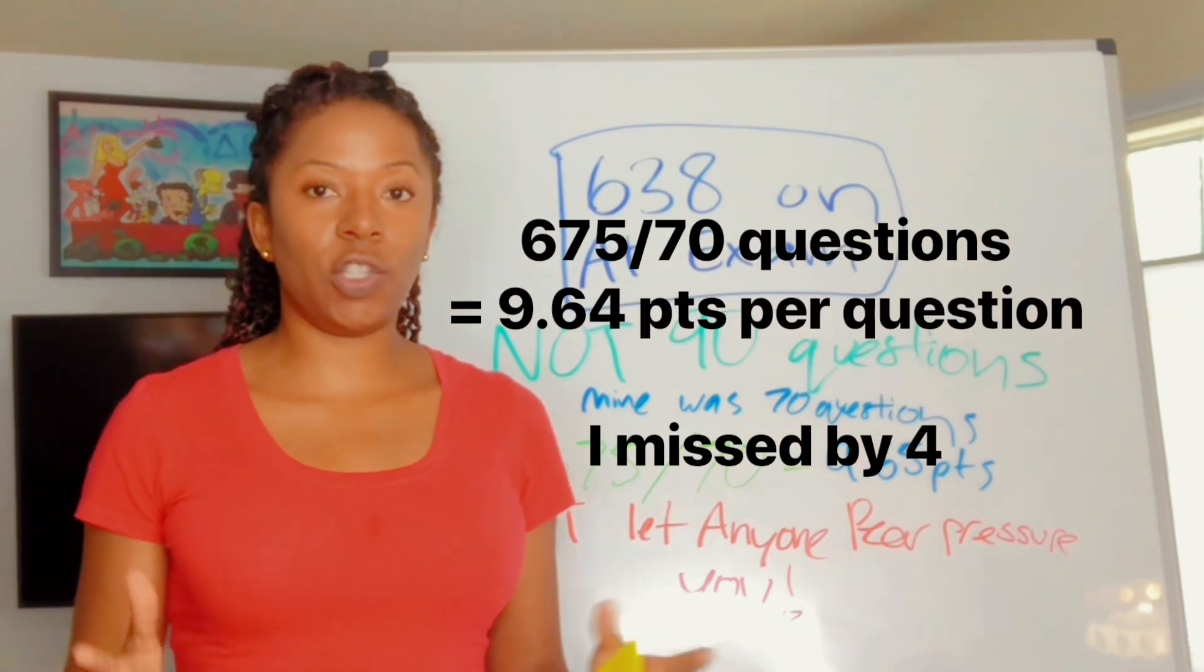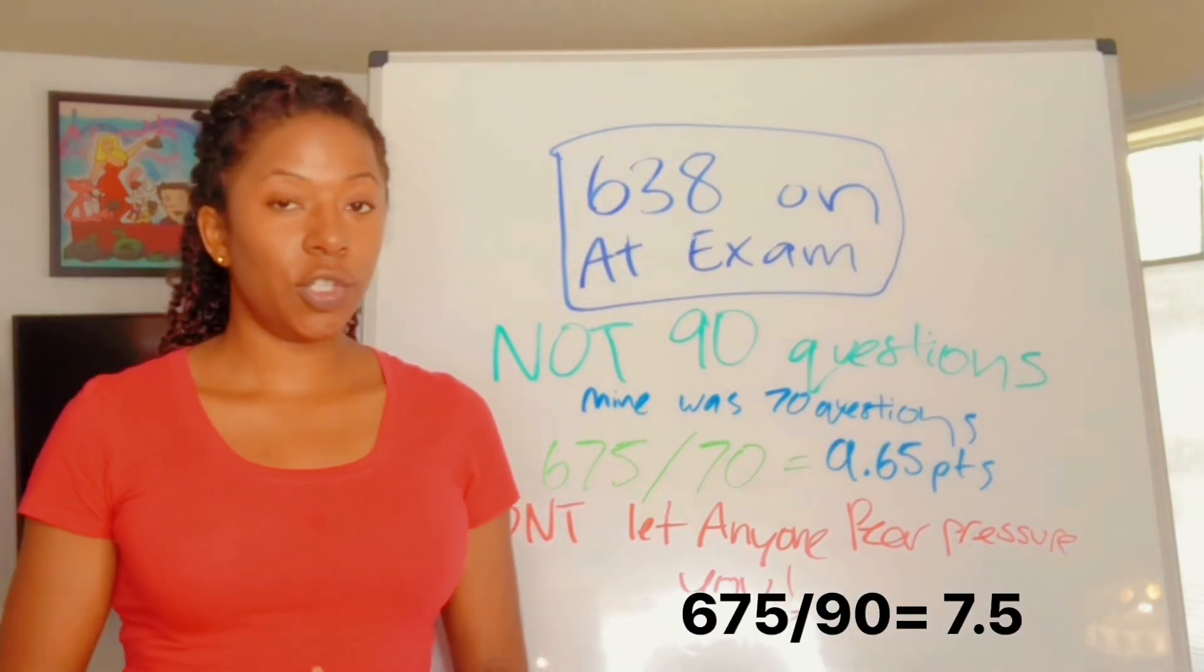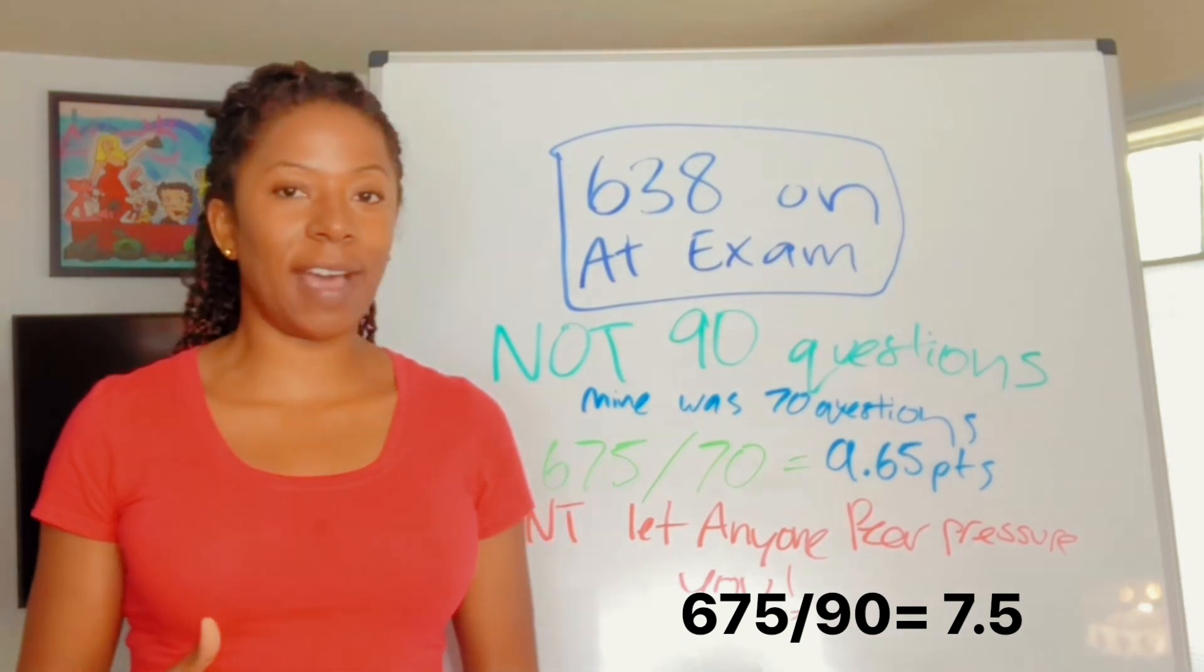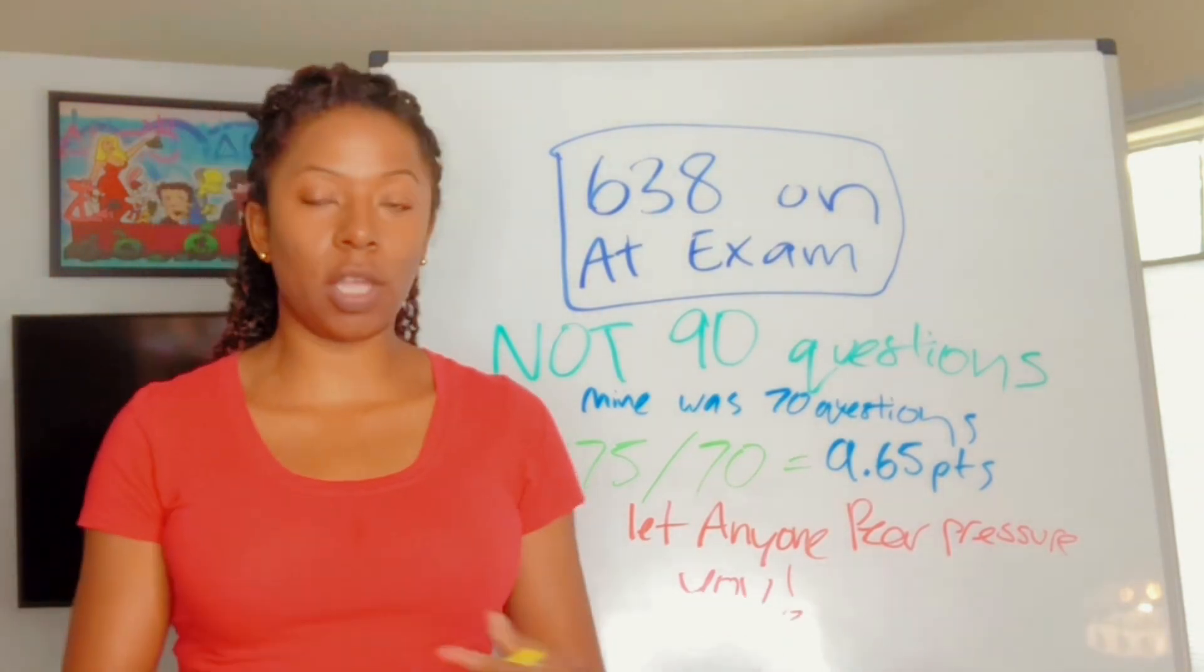If you have 90 questions, that means there's more wiggle room to get stuff wrong. 70 questions, you really don't have a lot of wiggle room. So, right off the top, I knew that this was going to be not what I expected, and that's why I'm telling you before you go.